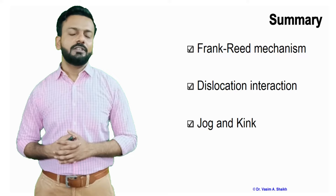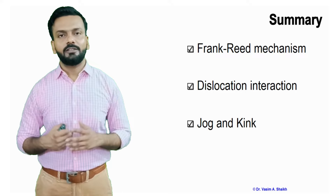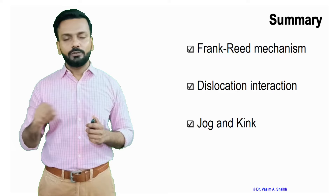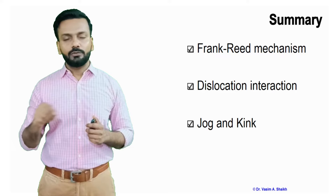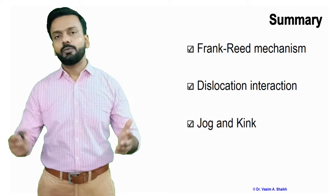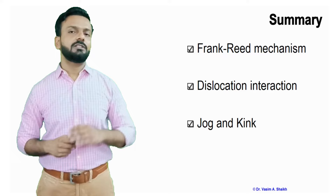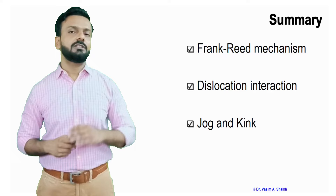Let us summarize what we have studied today. We have seen the Frank-Reed mechanism: dislocations multiply when we apply load or stress onto the material, loops are generated from a node of dislocation, and more load and stress is required to overcome that node as dislocations pile up. We also saw dislocation interaction: jog moves the dislocation line out of the current plane to another parallel plane, while kink moves the dislocation within the same plane. Both are called defects in defects.